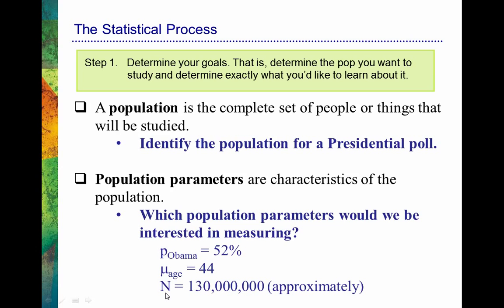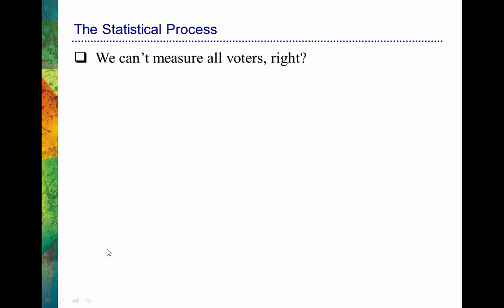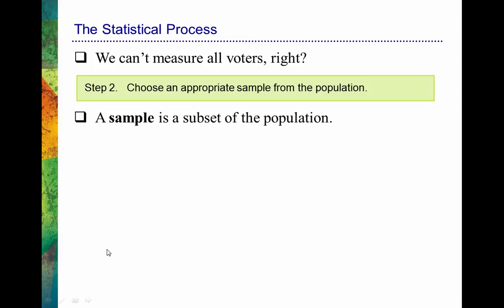When I design a study, I want to determine what population parameters I'm interested in — in this case, the proportion of people who plan to vote for each candidate. But that leads to step two, because there's no way I'm going to be able to measure 130 million people. So step two is: choose an appropriate sample from the population. A sample is simply a subset of the population — since we can't measure the entire population, we measure a subset, which we call a sample.